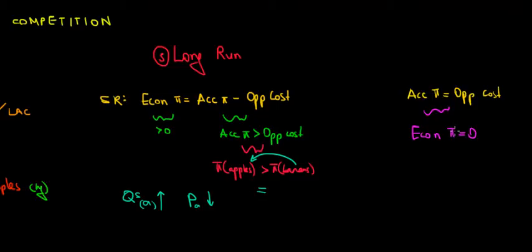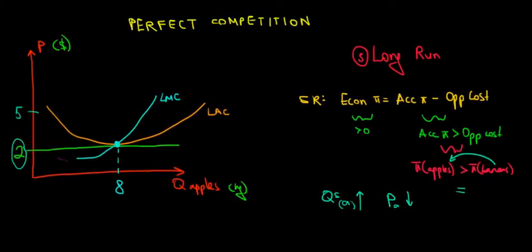One thing I'm stressing here — and it was confusing for me as well — is that economic profit is not the money that we keep in our pocket. It's not zero money for us; we have actual positive accounting profit. We make money from selling apples, just the same amount as we could be making from selling bananas. That's the whole intuition here.